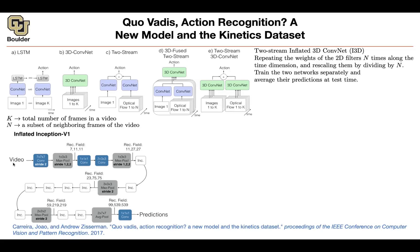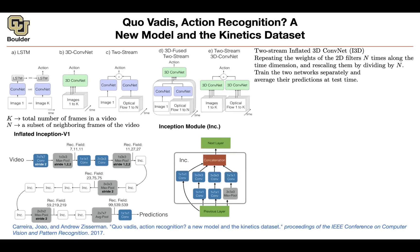3D convolutions are not cheap — even putting a video on a GPU consumes a lot of memory. Your batch size will be very small, probably one or two videos fitting on your GPU. There are constraints we have to deal with. We use an inception module; there is nothing special about it — it's what we covered for 2D, now with a third dimension.